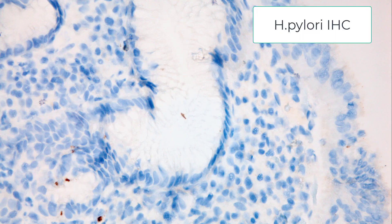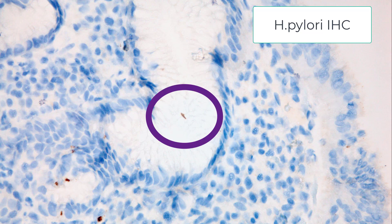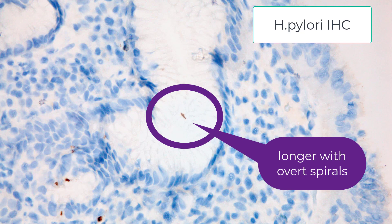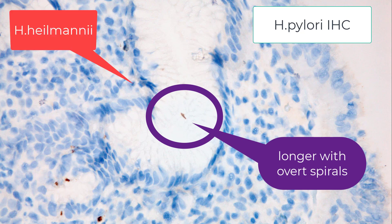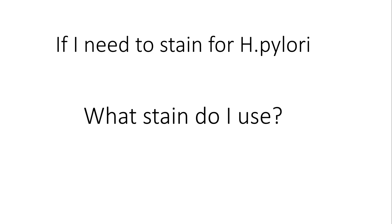Here's another immunohistochemical stain — certainly positive, with some forms that look a little intracellular but are not. But look at this organism: it's longer and you can almost imagine the spirals. This is not Helicobacter pylori — this is Helicobacter heilmannii. This is a variant of Helicobacter pylori gastritis that tends to be associated with less active inflammation. Interestingly, Helicobacter heilmannii also stains on the immunohistochemical stain we use for H. pylori, and both respond to the same therapy.